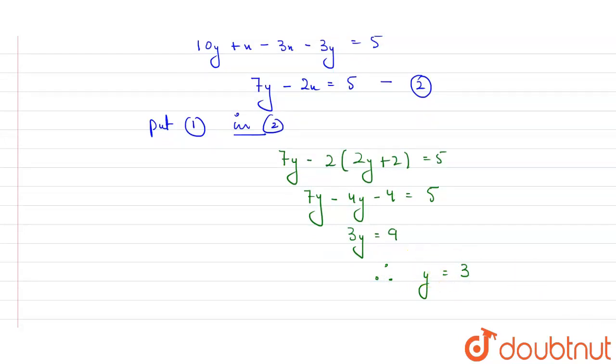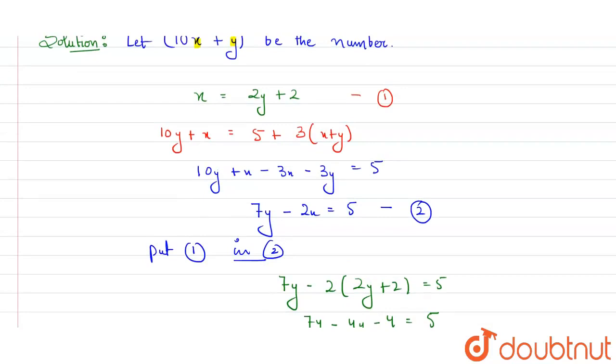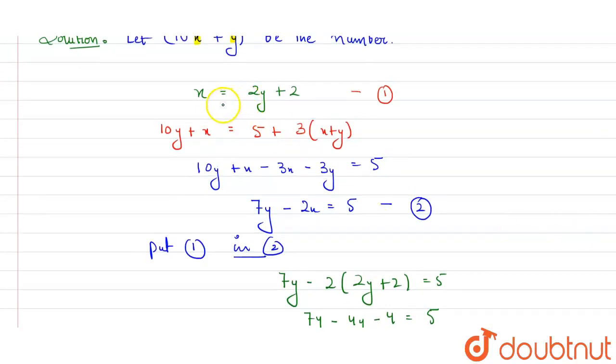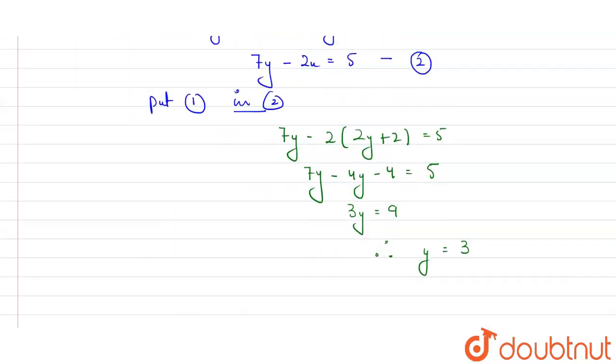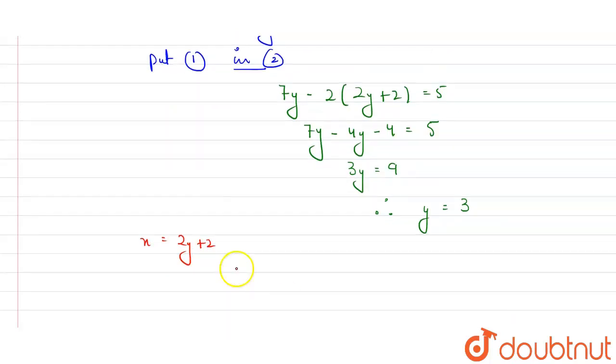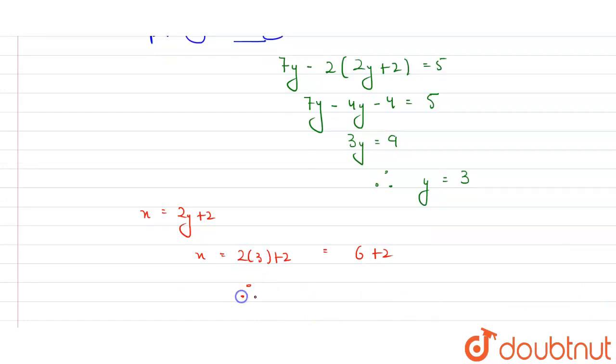Value of y is 3. So now we can find the value of x. x is equal to 2y + 2, that was equation number 1. So if I'll implement the value of y here, it will be 2(3) + 2, which is 6 + 2, that is 8. Therefore value of x will be 8.